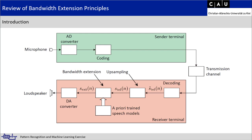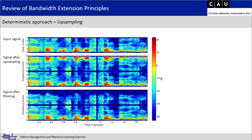Now we look at different methods of bandwidth extension. First I'll show the very basic version with upsampling and mirroring, and afterwards explain the more advanced model-based approach. The upsampling and mirroring approach is what we will program in Python. It is the deterministic approach, so it doesn't depend on the signal itself.